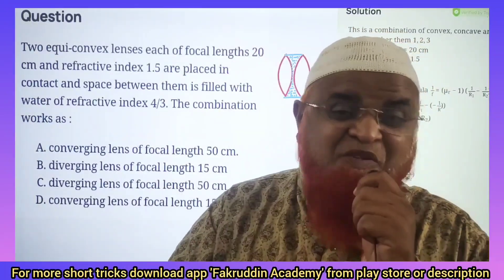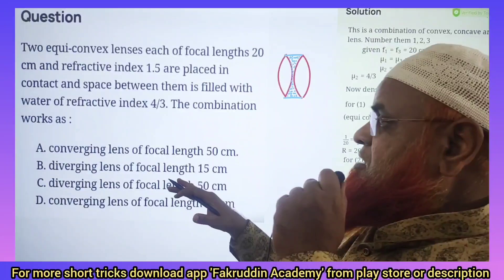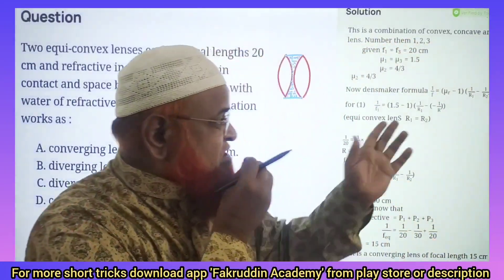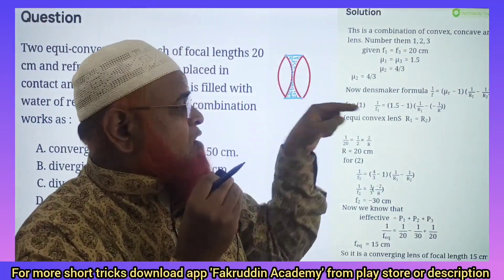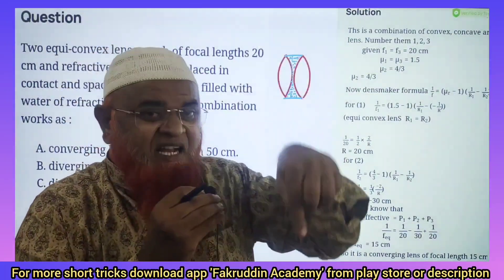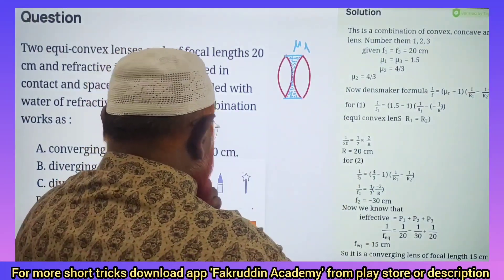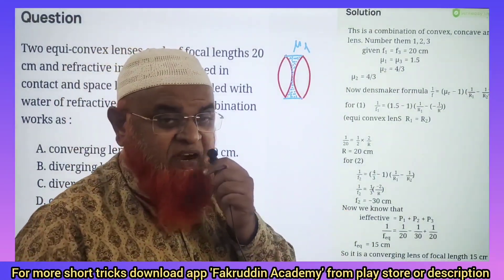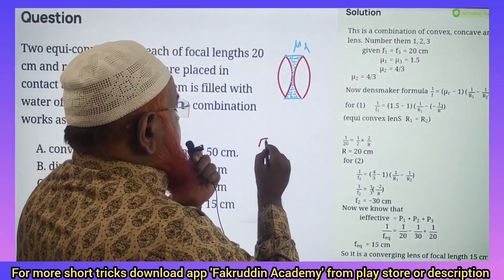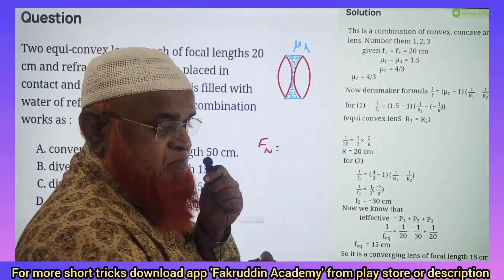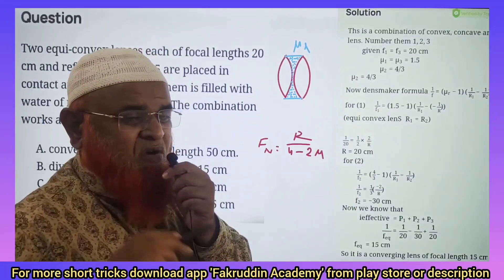This is a highly problematic question especially for NEET students, but there is a shortcut for this. You can see the lengthy methods given in the books. Actually there are two equi-convex lenses with a liquid in between, and the refractive index of the liquid is μL. The formula for net focal length is: F_net = R / (4 - 2μ). This is a shortcut formula.